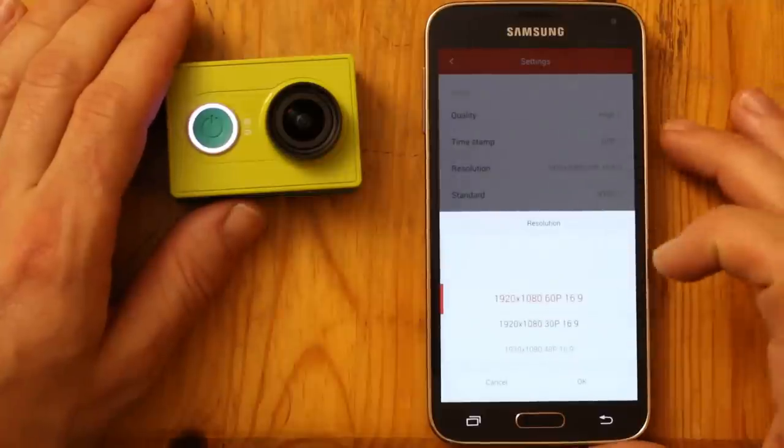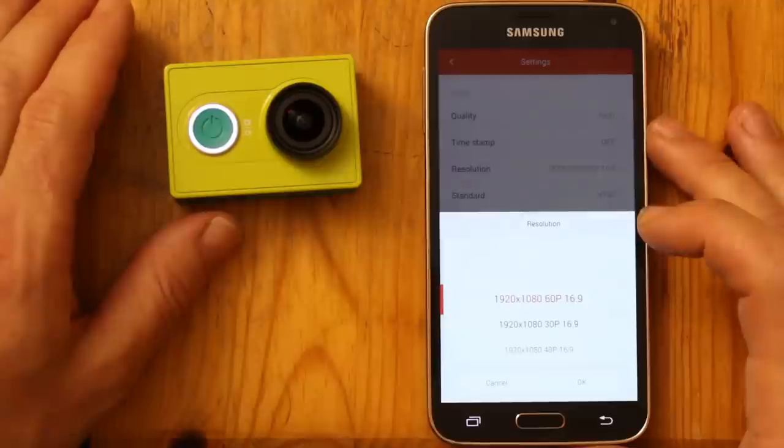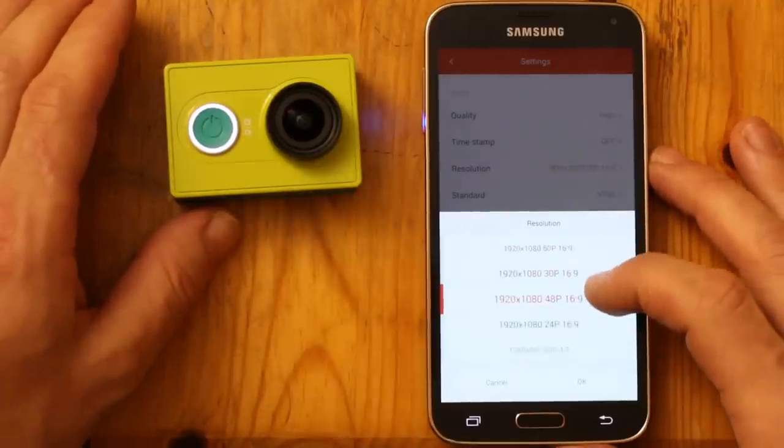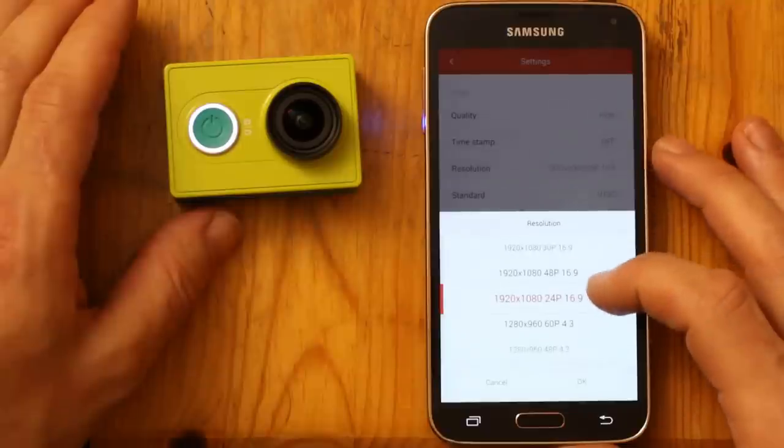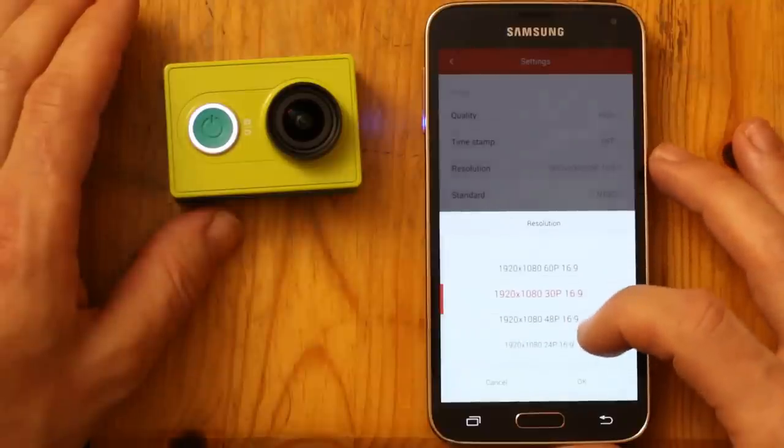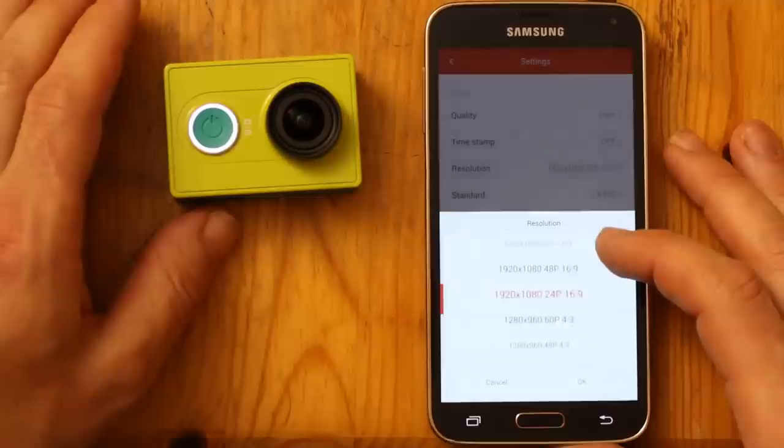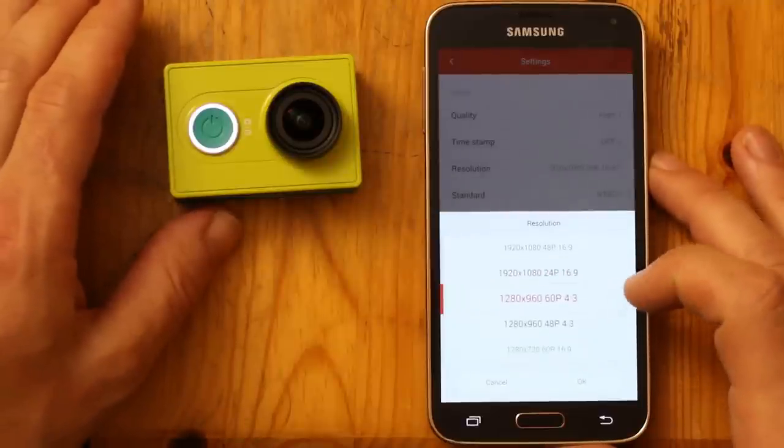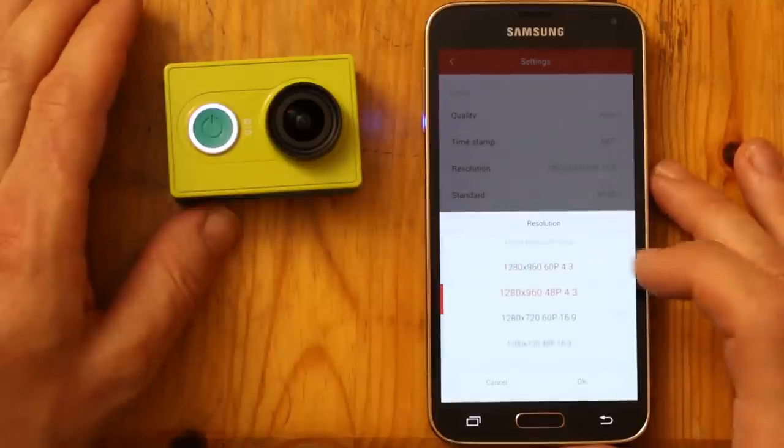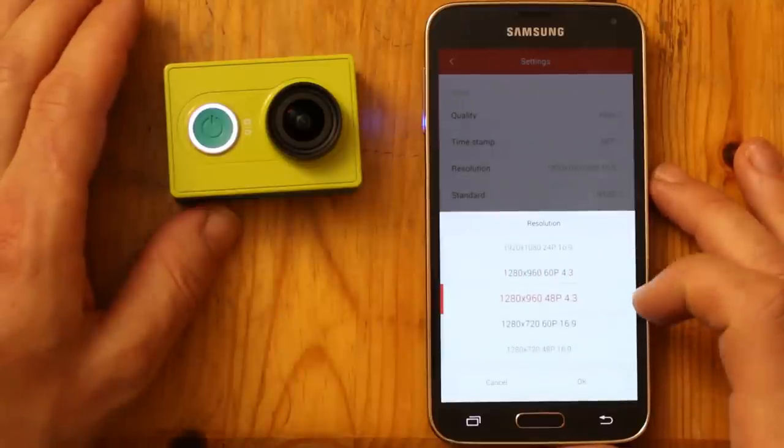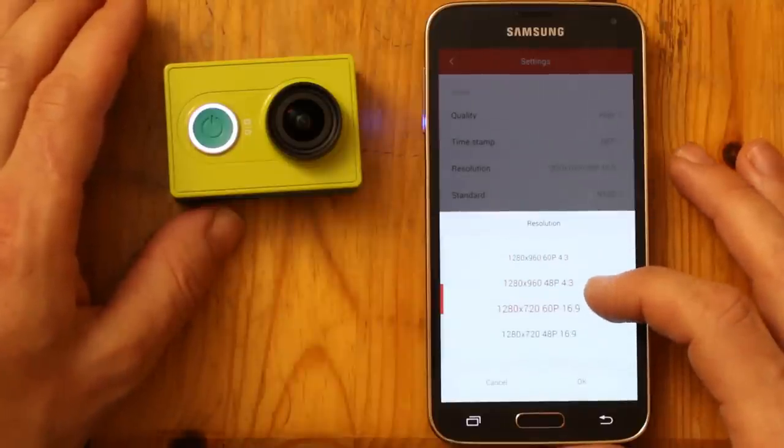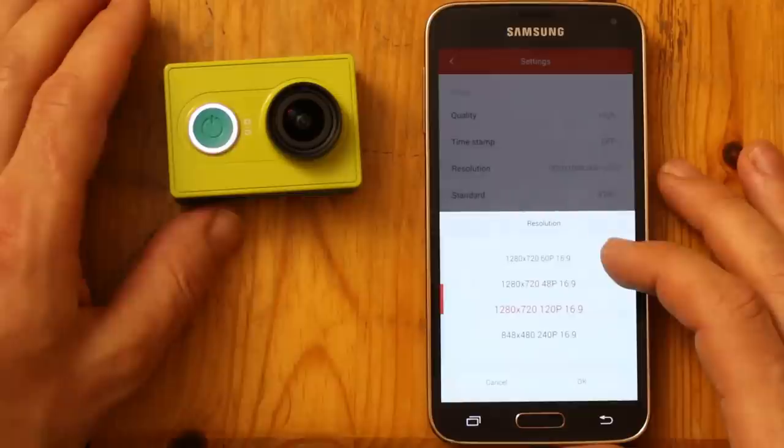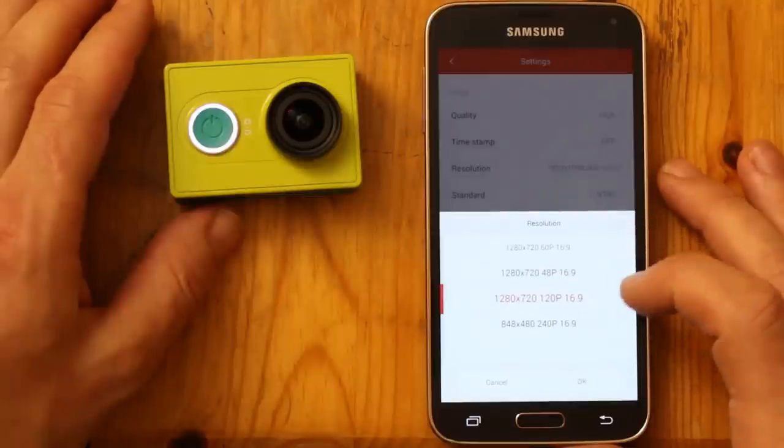So it can do 1920 by 1080, 60 frames a second. It can do 30 frames a second, 48 frames a second, 24 frames a second. It can do 1280 by 960, which is 4 to 3 at 60 frames a second, or 48 frames per second. It can do 1280 by 720, which is again, 16 by 9 at 60, 48, or 120 frames a second.